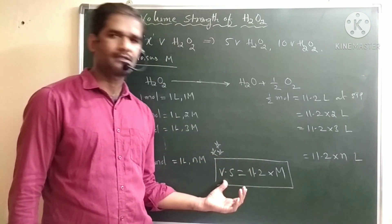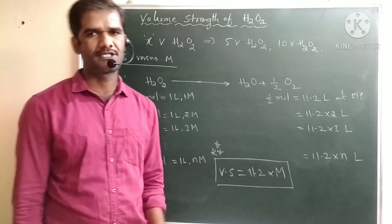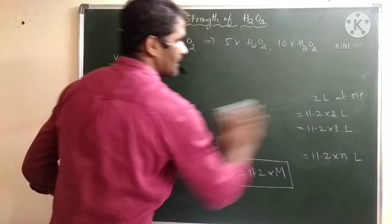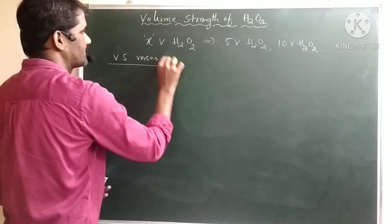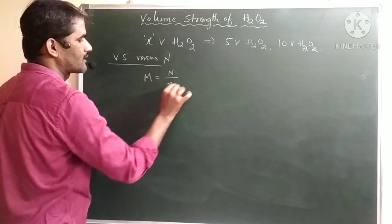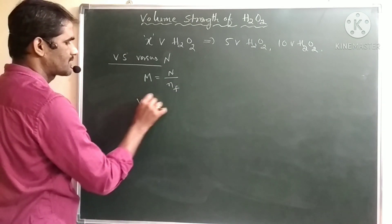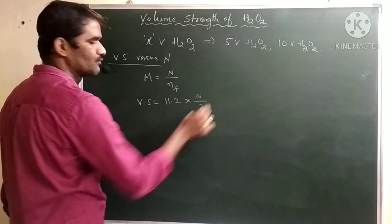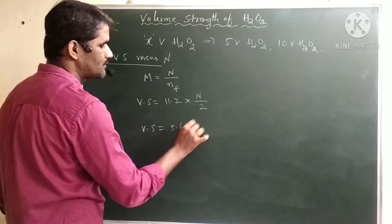Once we know the volume strength and molarity relation, we can easily convert to normality, because we know the relation between molarity and normality. Volume strength versus normality: since molarity = normality / N-factor, substituting: volume strength = 11.2 × (normality / N-factor). For H2O2 the N-factor is 2, so: volume strength = 5.6 × normality.